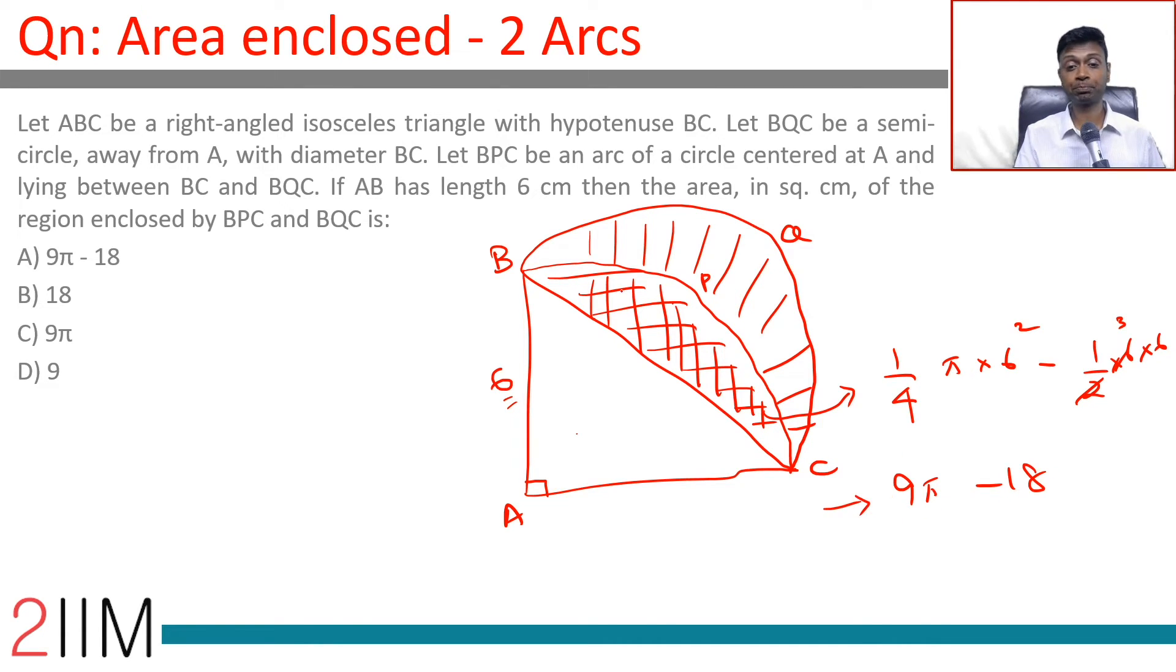This we need to subtract from the larger semicircle. Semicircle BQC that has BC measures 6 root 2. So, radius of that semicircle is 3 root 2. Area is pi into 3 root 2 whole square into 1 by 2, which is pi into 9 into 2 into 1 by 2 or 18, 9 pi.